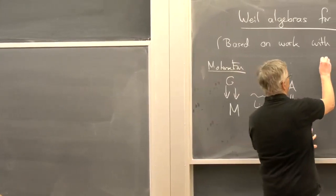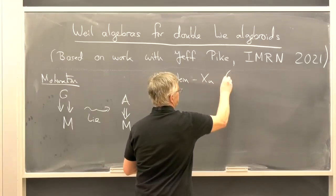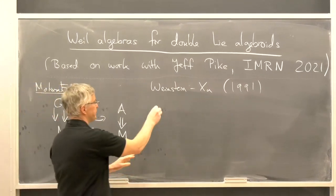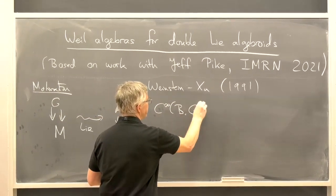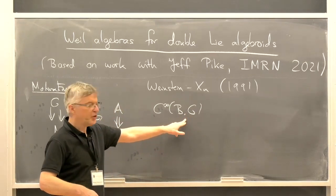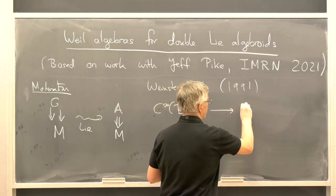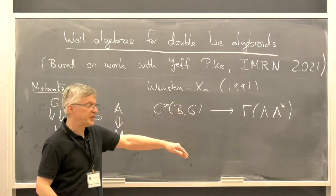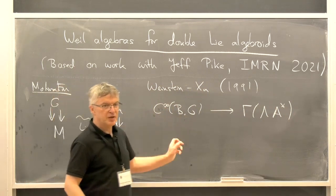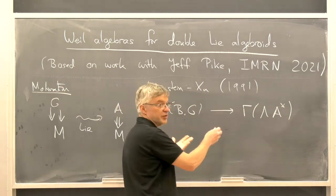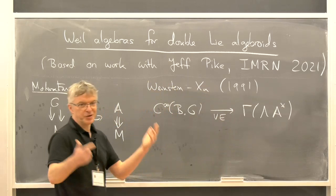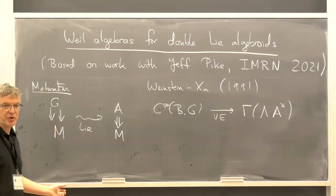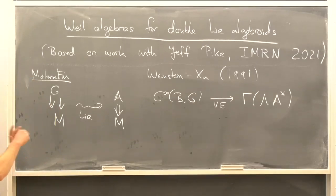Long ago — I think the paper was from 1991, unbelievably — Alan Weinstein and Ping Xu wrote down a cochain map from the groupoid cochain complex, which is smooth functions on BG, where BG are these composable arrows in the groupoid, to the Lie algebroid complex given by sections of wedge of A-star. There's a Van Est map which they constructed, which is a cochain map, and in low degrees it's often an isomorphism. It also generalizes the classical Van Est map one had for Lie groups.